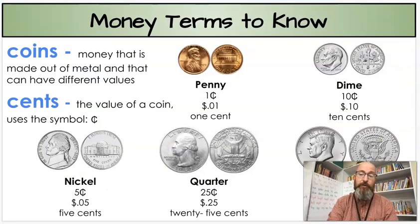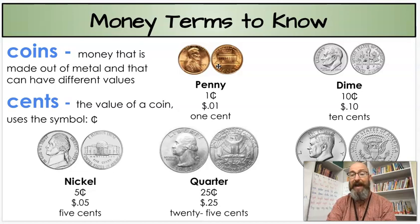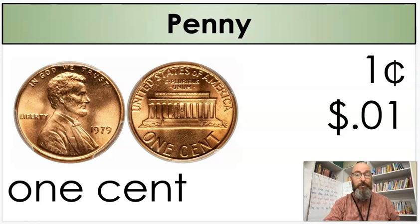So as we get started, let's review some terms that we need to know. Coins are money made out of metal and can have different values. Different values means different amounts it can be worth. Cents is the value of a coin. What's a coin worth? That's the number of cents it's worth. So a penny's worth one cent, a dime is worth 10 cents. These are terms you need to know, as well as the names of the coins. Let's quickly go through these and then we're going to practice counting some money.